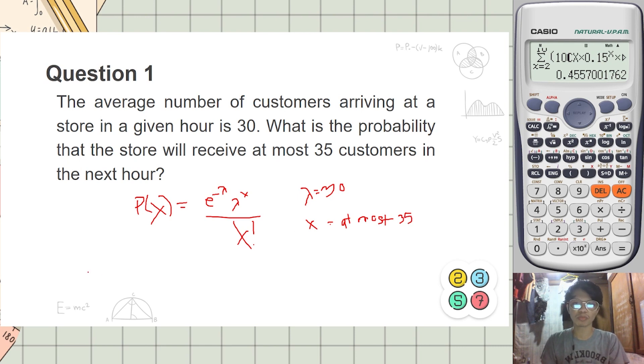Okay, in our calculator, pwede na natin i-direct using the summation function. Press AC to clear, shift summation, then since it's at most 35, we start from zero papuntang 35.